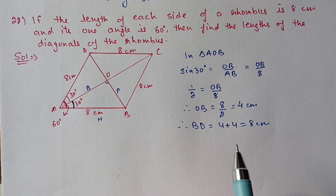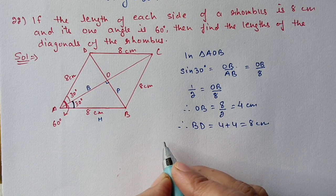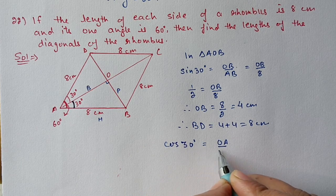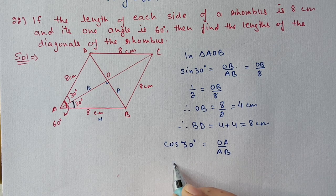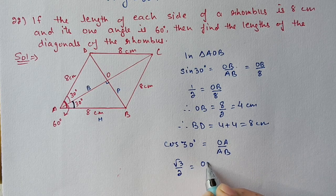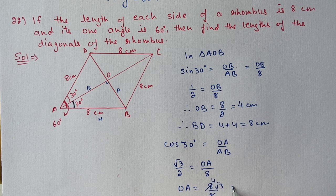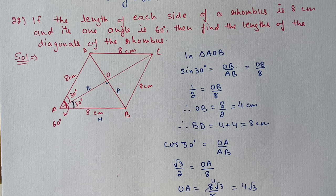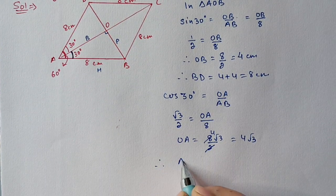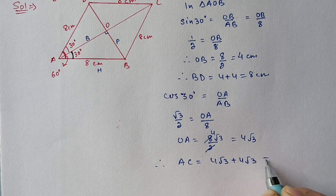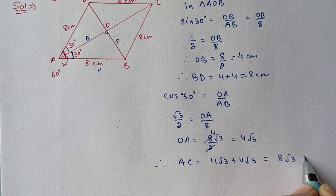In the same triangle we apply cos: cos 30° equals OA upon AB. cos 30° = √3/2, and AB = 8, so OA = 8 × √3/2 = 4√3. Therefore the other diagonal AC = 4√3 + 4√3 = 8√3 centimeters.